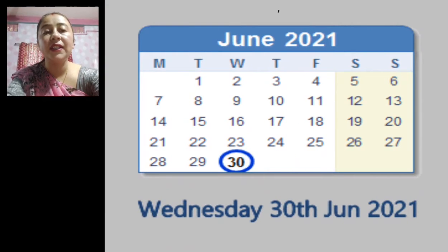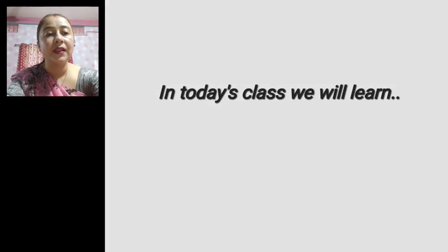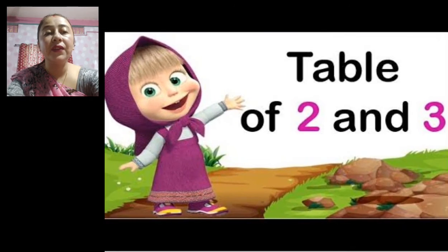Today is Wednesday and it is 30th of June, which means today is the last day of June 2021. In today's class, children, we will learn the table of two and three.